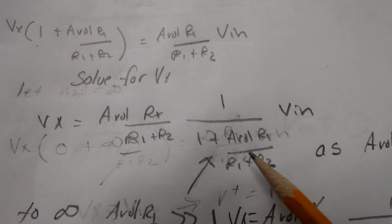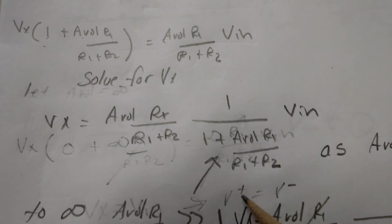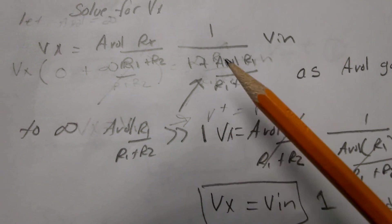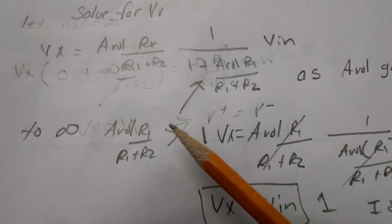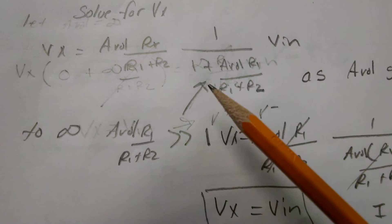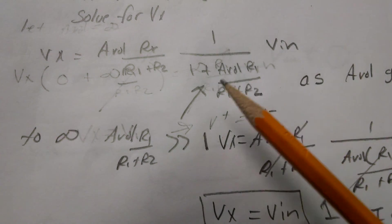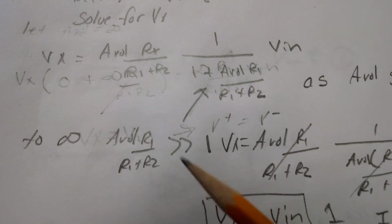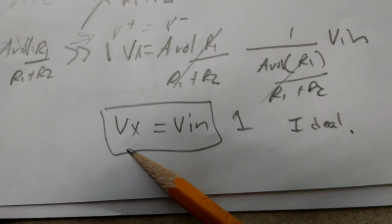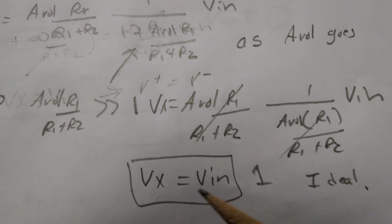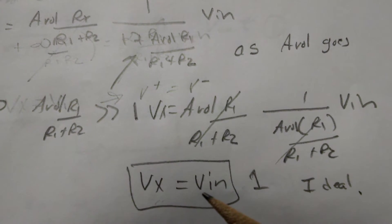Vx equals open-loop gain R1 over (R1 + R2). What you notice is that if I allow the open-loop gain to go to infinity, this is a lot bigger than one so it drops out. This cancels with that and you are just left with Vx equals Vin in an ideal case.